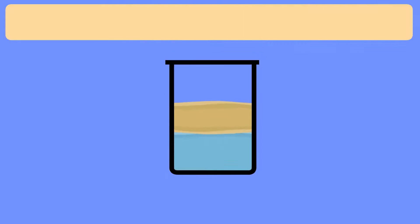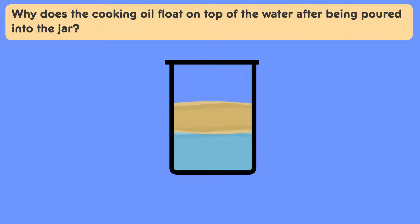Here's your question for today. Why does the cooking oil float on top of the water after being poured into the jar?